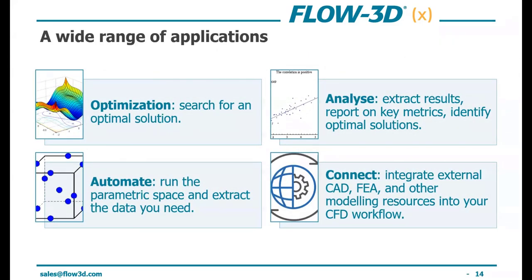The main idea of Flow3DX is centered around workflow automation and connectivity. Starting with automation, we can set up a parametric space for model simulation — Flow3DX will populate your simulation file with any combination of parameters you define. This could be simulation parameters like turbulence models, mesh size, flow rate boundary conditions, or variables tied to parametric CAD models that feed and update geometry. The connect part is done via nodes: CAD nodes, FEA nodes, Excel nodes, and more.